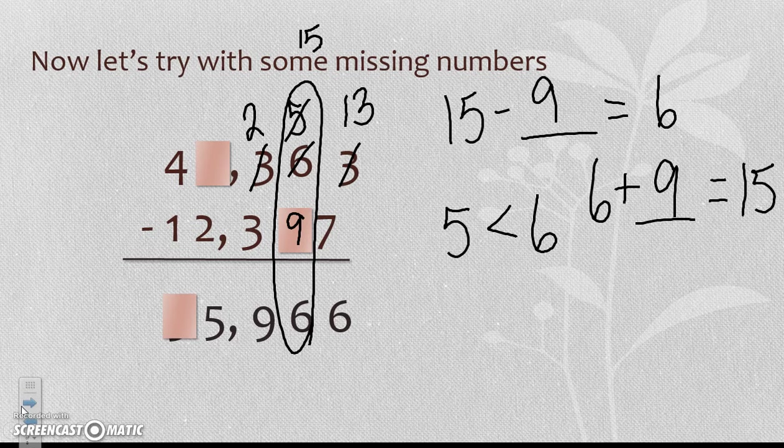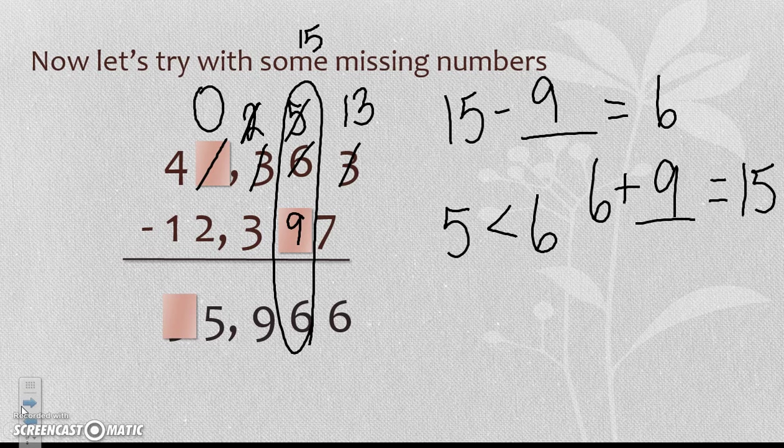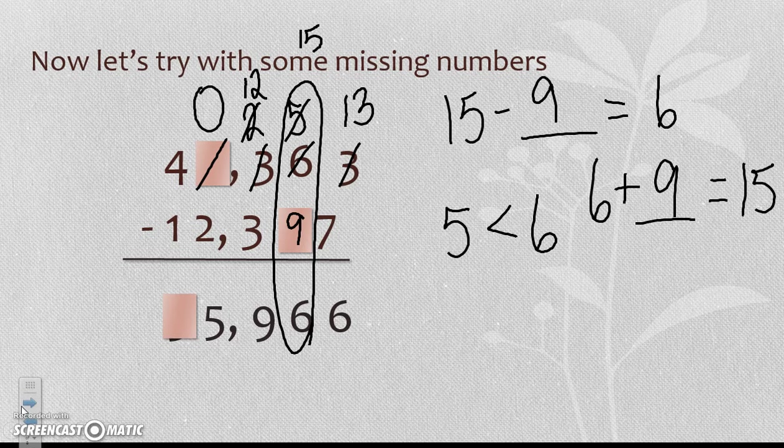Now if I go to my hundreds place, I see that 3 minus 2 does not equal 9. So I have to regroup here, but I don't know what value I'm regrouping, so I'm going to have to keep that in mind when I go to the next place value. But I do know that when I regroup, my 2 becomes a 12. So 12 minus 3 is equal to 9.